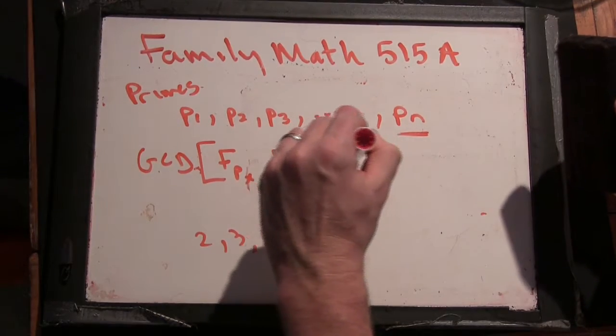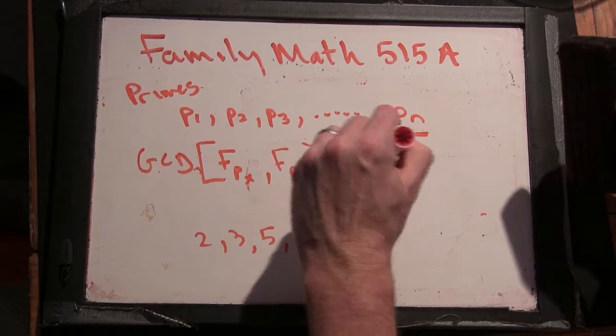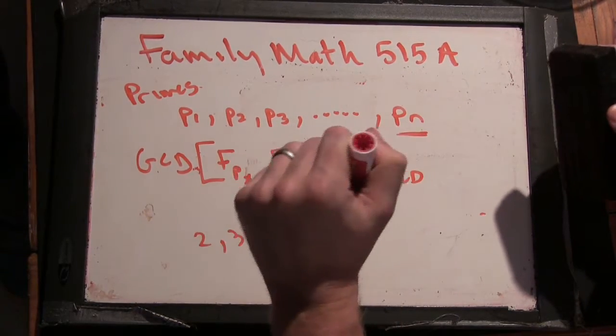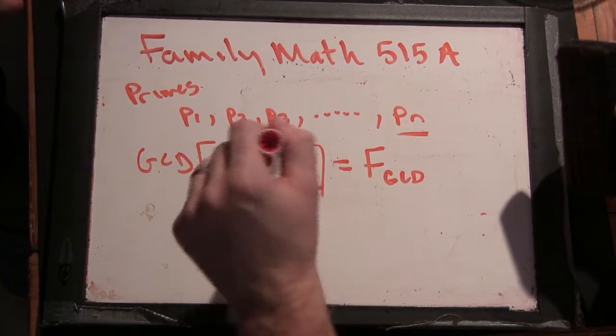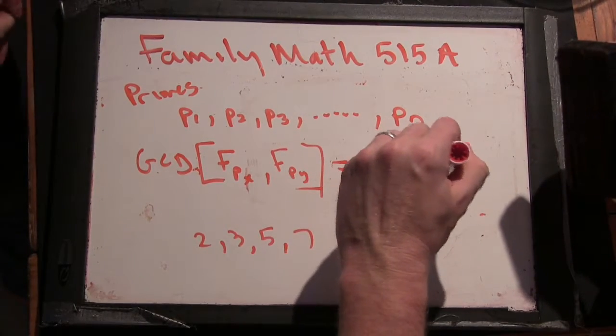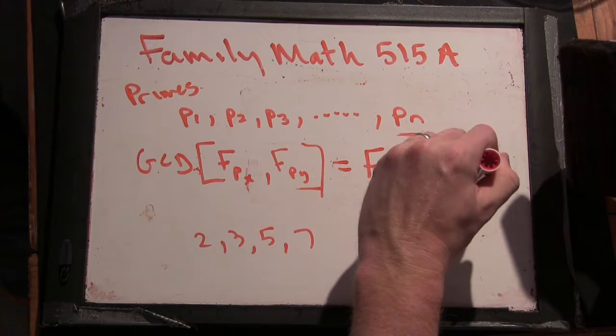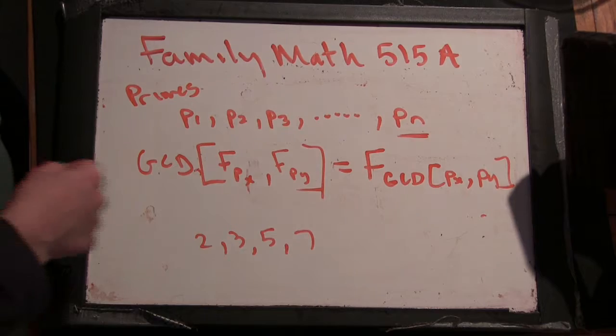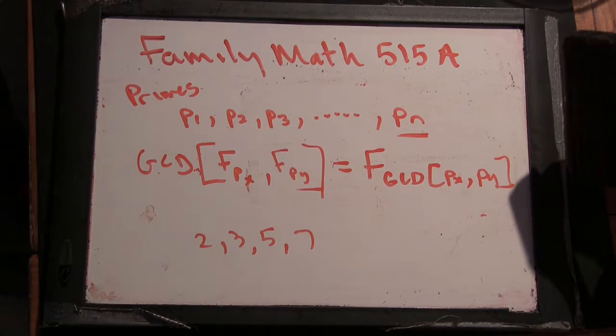So this should be the Fibonacci number of the greatest common divisor of Px and Py. But wouldn't that always be 1? Right. So that means this has to equal 1, too.